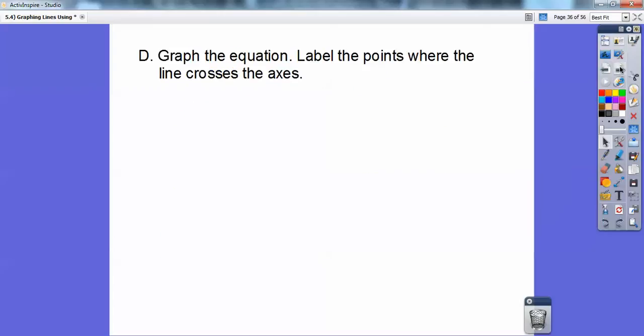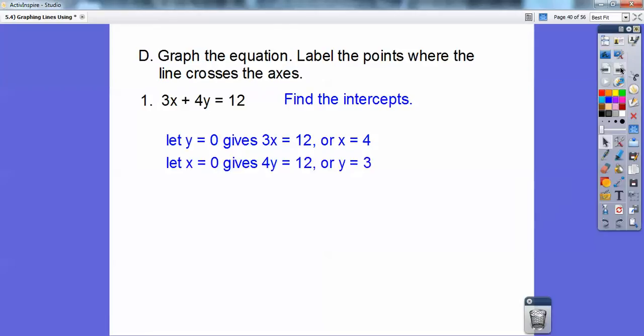So graph the equation, label the points where the line crosses the x-axis. This way is easier than the last method, I think. We just use our intercept method. So the intercept method is when we let y equal 0. When I let y be 0, I'm finding the x-intercept. So it gets rid of this 4y, so I'm left with 3x equals 12. So 3 goes into 12 four times. So that's the x-intercept.